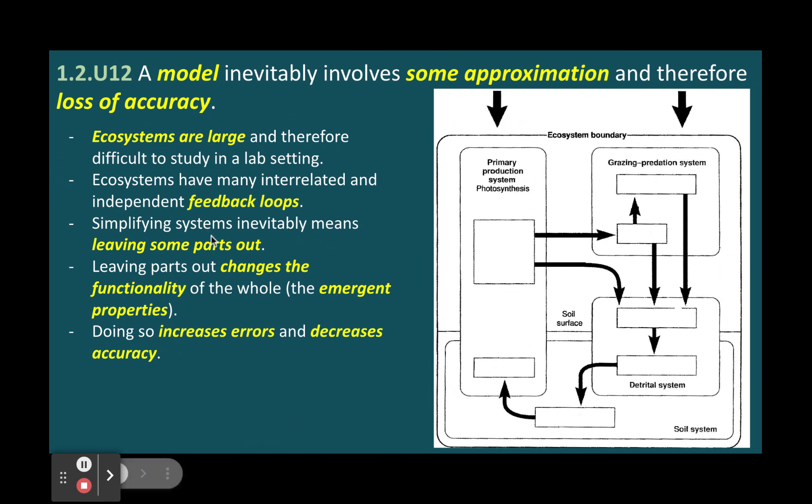To construct a model from a given set of information, we need to identify the key components and processes of the system we want to model and decide how to represent them using symbols and rules. We also need to make assumptions and simplifications to reduce the complexity of the system and to focus on the most relevant aspects. We then need to test and refine our model using data and observations to check if it matches reality and to improve its accuracy and reliability.